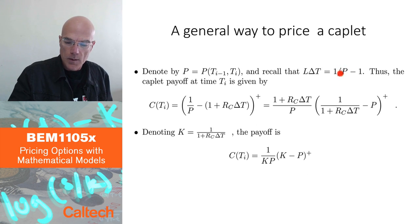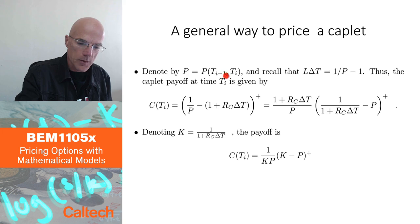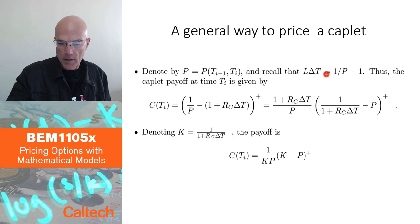Alright, so I have this formula for the LIBOR rate at Ti minus 1. And so then it's not the forward rate, then it's really just the rate at Ti minus 1 corresponding to the period Ti minus 1 to Ti.